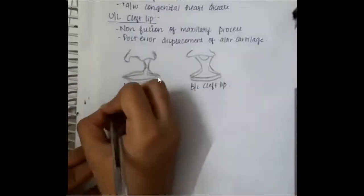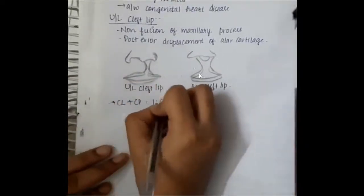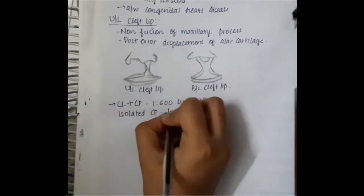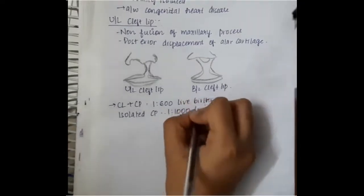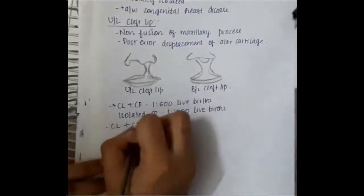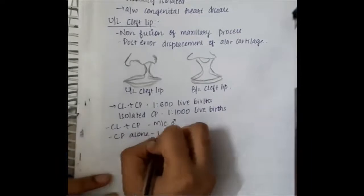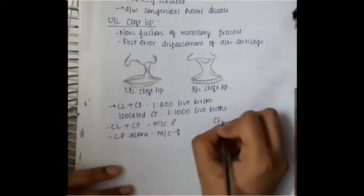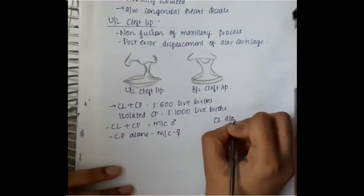This is bilateral cleft lip. Normally cleft lip with cleft palate is seen in 1 in 600 live births whereas isolated cleft lip is seen in 1 in 1000 live births. Cleft lip and cleft palate are more common in males and cleft palate alone is more common in females.